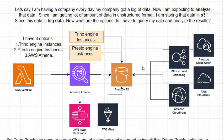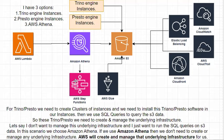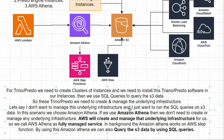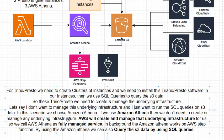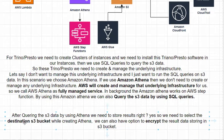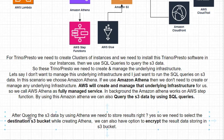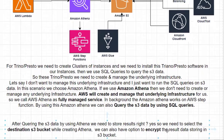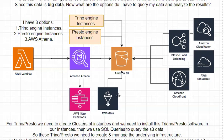Quick recap: we can analyze S3 big data using Amazon Athena with SQL queries. We don't need to manage the underlying infrastructure — AWS will manage it for us, so Amazon Athena is a fully managed service. While configuring, we have a destination S3 bucket option and an encryption option to indicate whether our stored data is encrypted and where our results will be stored.